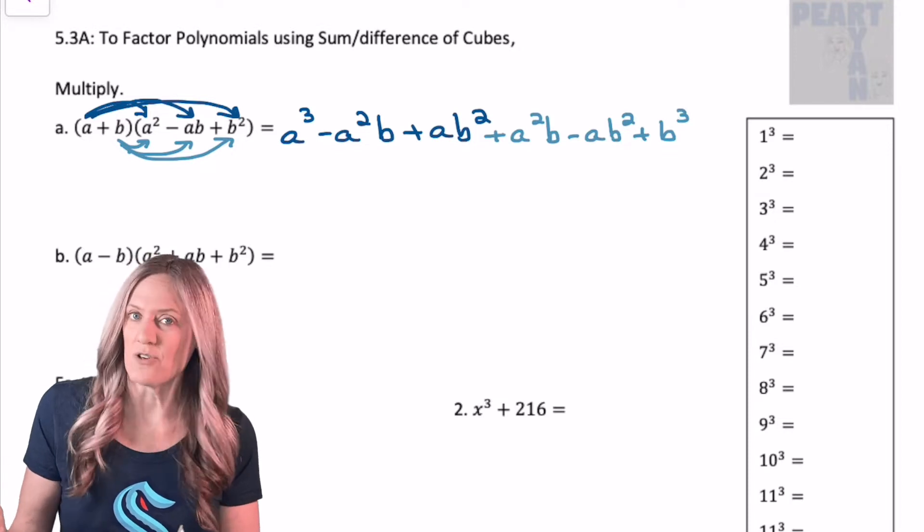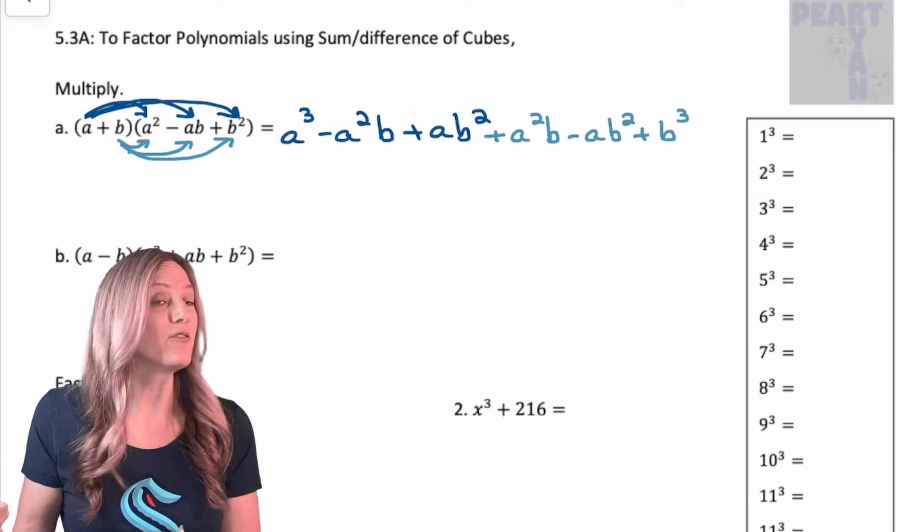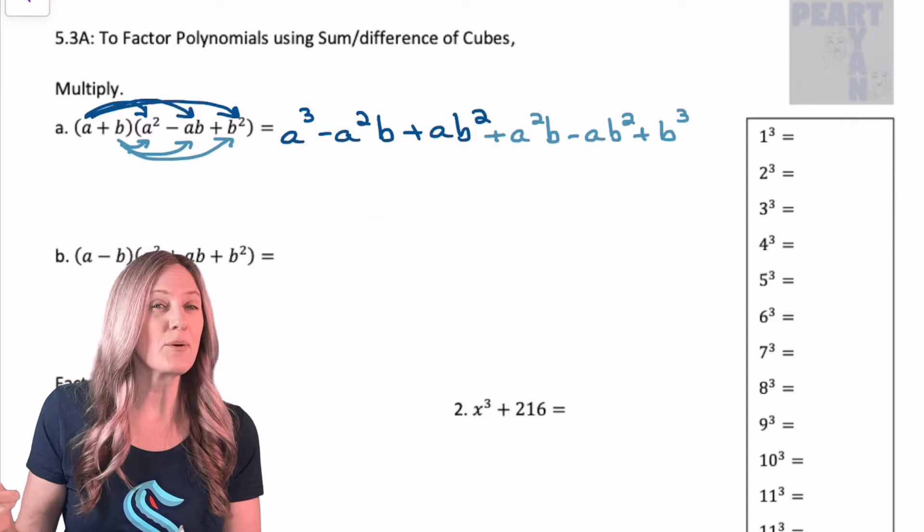Notice when I distributed b into the trinomial, I wrote the factors in alphabetical order. Now let's go through and simplify.